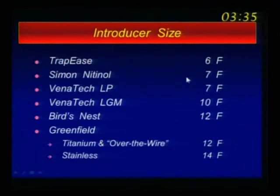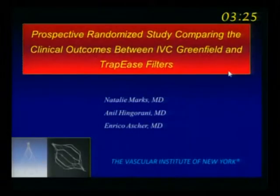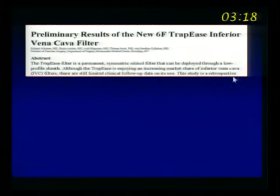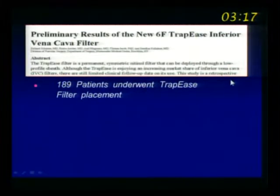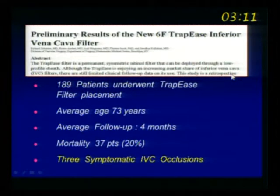The introducer size goes from 14 French for the Greenfield stainless steel down to six French for the trapeze. It seemed very attractive and everybody was doing it. But we noticed in our practice that these patients actually had more vena cava thrombosis, and we decided to do a prospective randomized study. We published preliminary results with the trapeze filter — we were all excited about it — but we found three patients with symptomatic IVC occlusions within a short period of time.